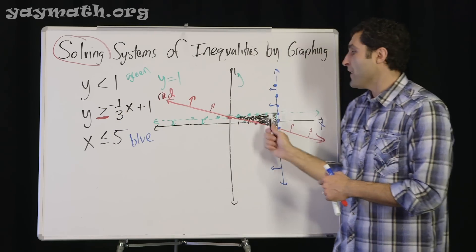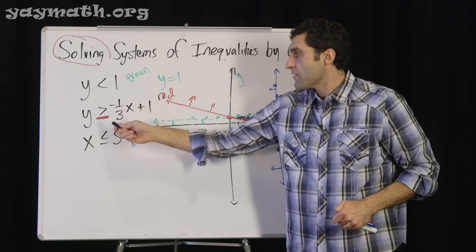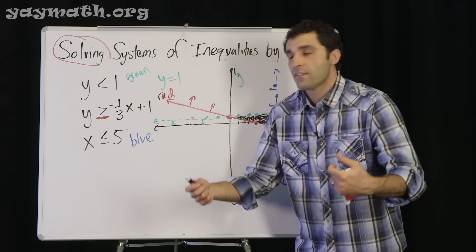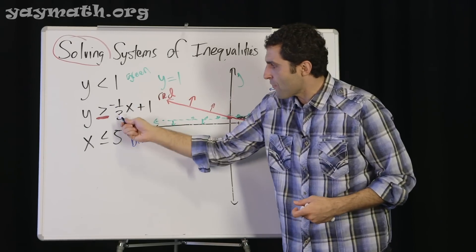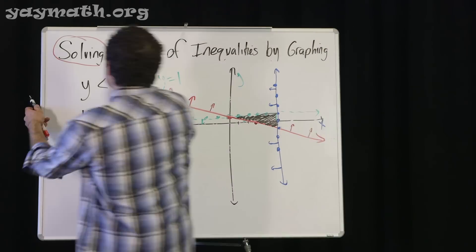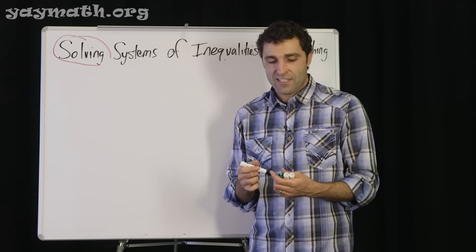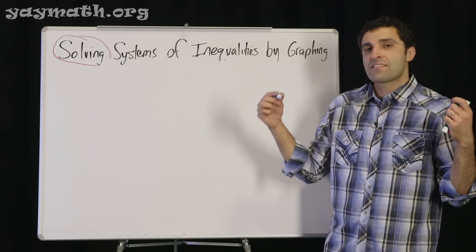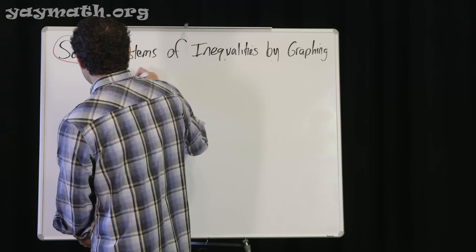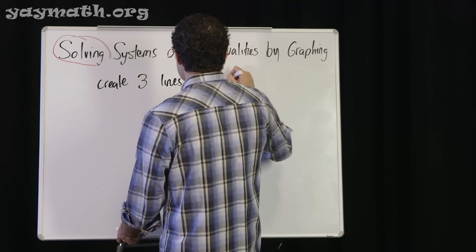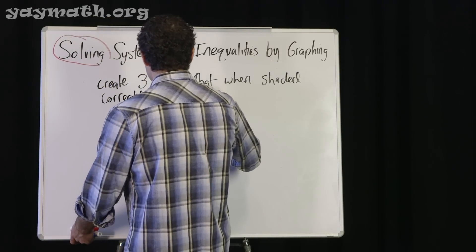Every point within this region satisfies all three inequalities. For example, the point (4, 0): plugging it in, it would make all three true — it satisfies all three equations. That's the goal. Final challenge — I put this on my math tests and students really enjoy it once they get it: create three lines that, when shaded correctly, form a triangle in the fourth quadrant.